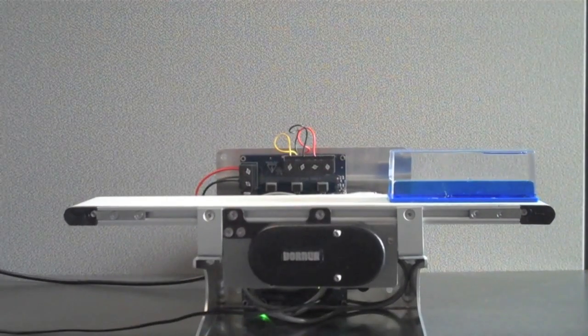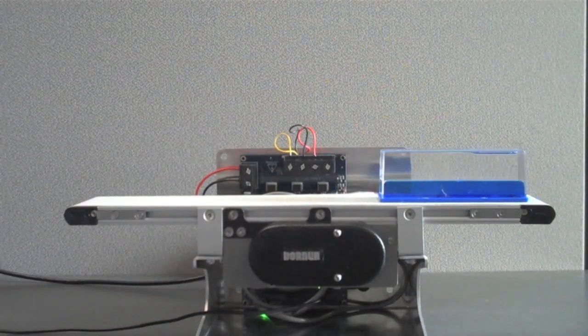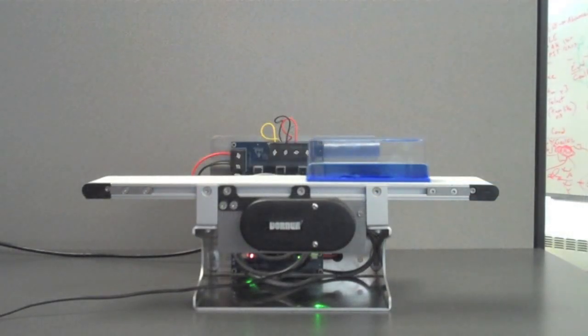With a single tuning parameter, Instaspin Motion was able to control the position of this conveyor over a speed range of 6 RPM to more than 3300 RPM.